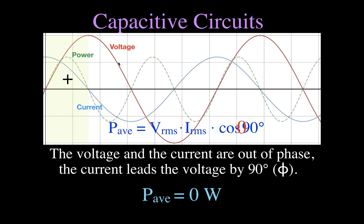In the next quarter cycle, the voltage is still positive but the current is negative, so a positive voltage times a negative current results in a negative power. For the third quarter, we have a negative voltage and a negative current — a negative times a negative is positive — so we get a positive power. But for the last quarter cycle, we have a positive current and the voltage is still negative, so a negative times a positive still gives us a negative value.